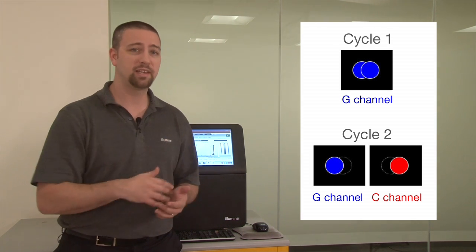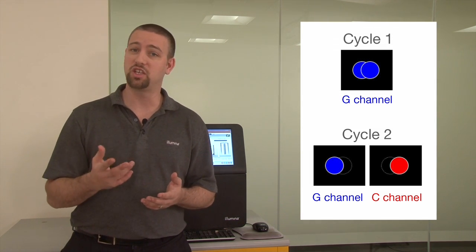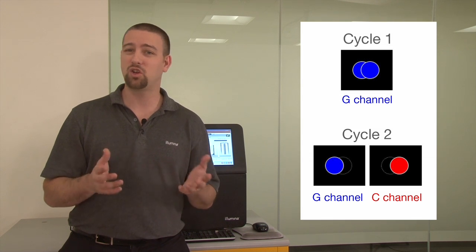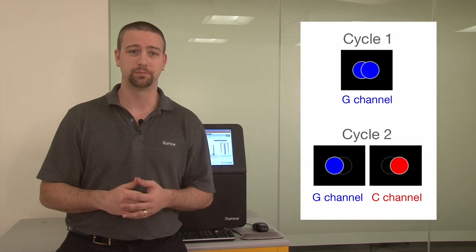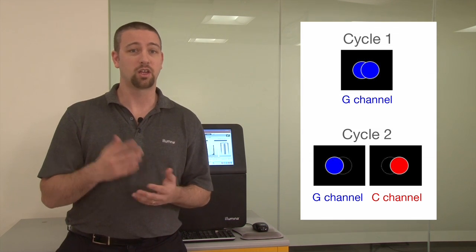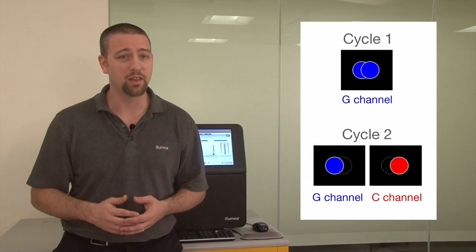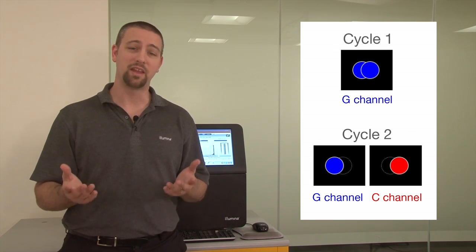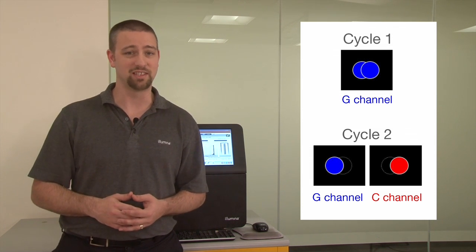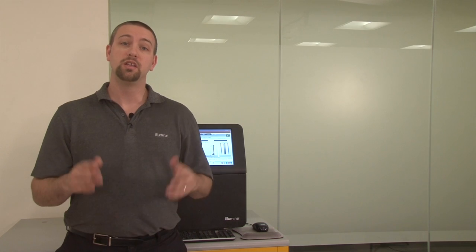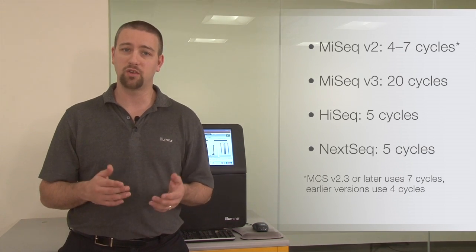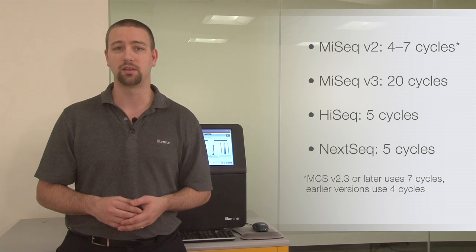Here we see an example of two clusters with a G base in cycle one that could be mistaken for one larger cluster. Cycle two helps to clarify the two clusters, as one cluster gives a G signal and the other gives a C signal. Depending on the instrument and chemistry type, we use between four and 20 cycles to generate this template of cluster locations.